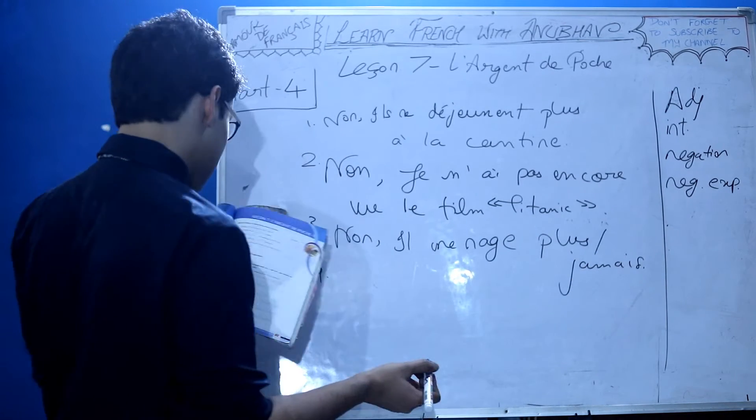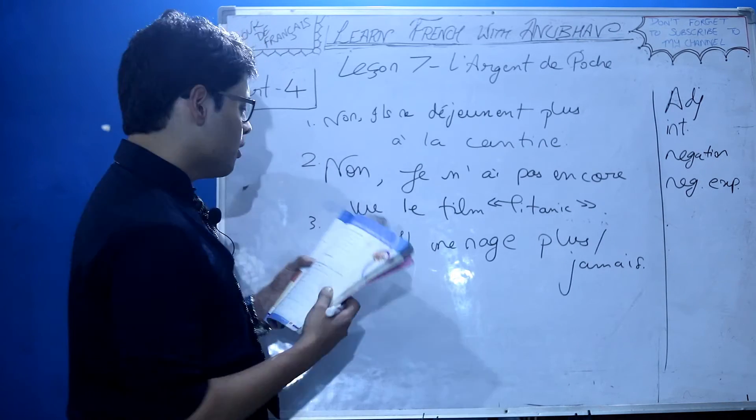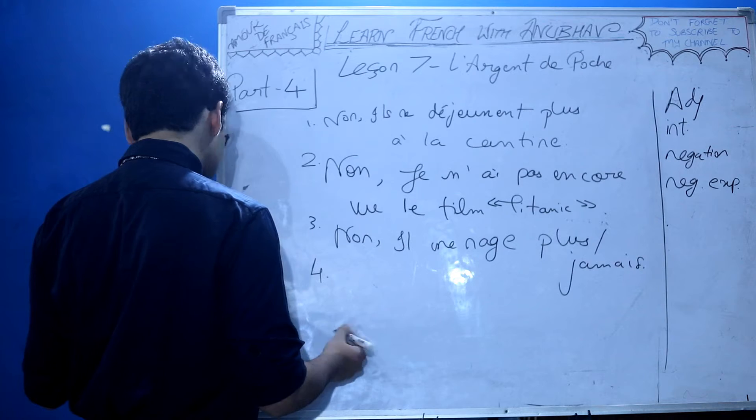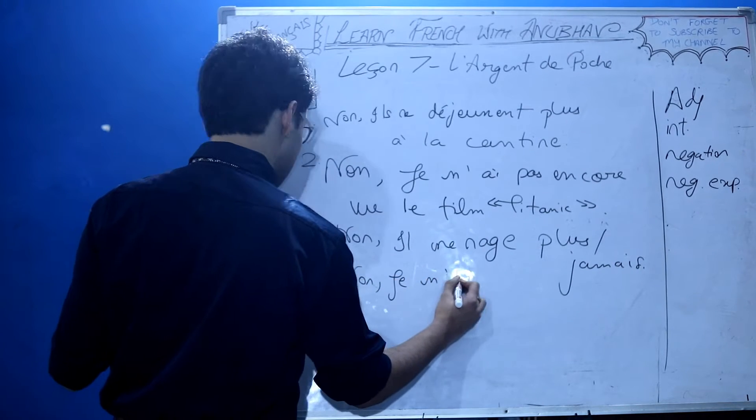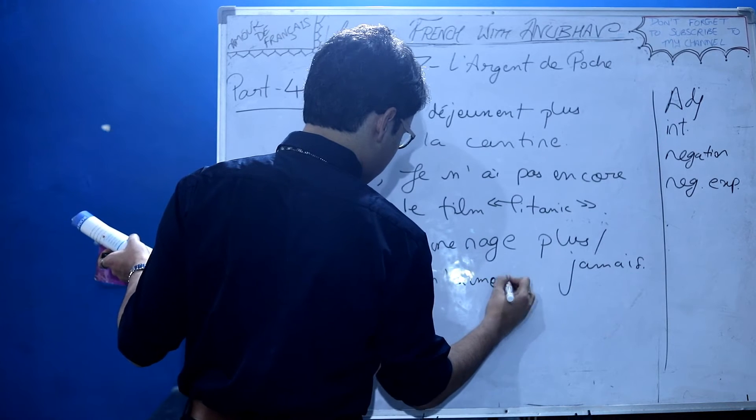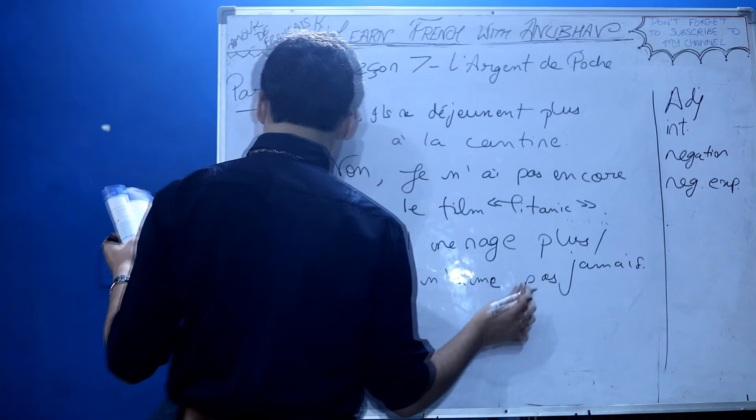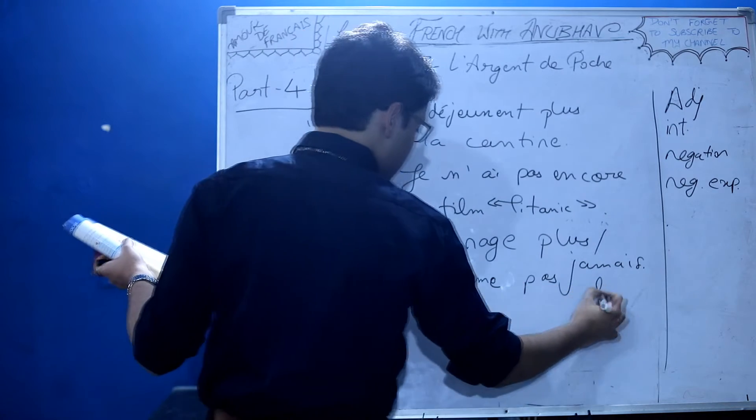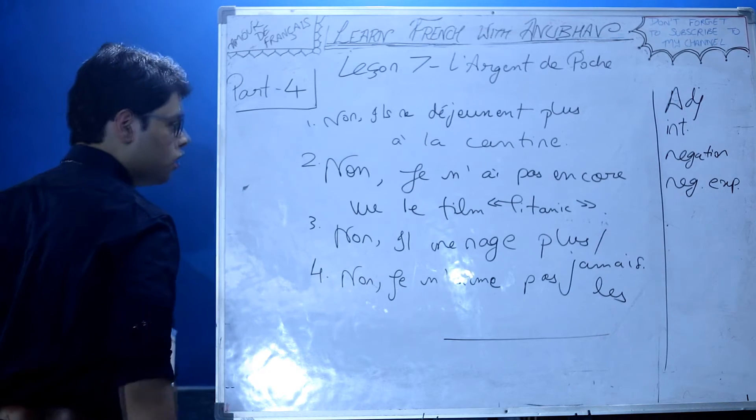Fourth: Tu aimes les mathématiques. This is a simple statement which needs simple negation: ne pas. Je n'aime pas les mathématiques.